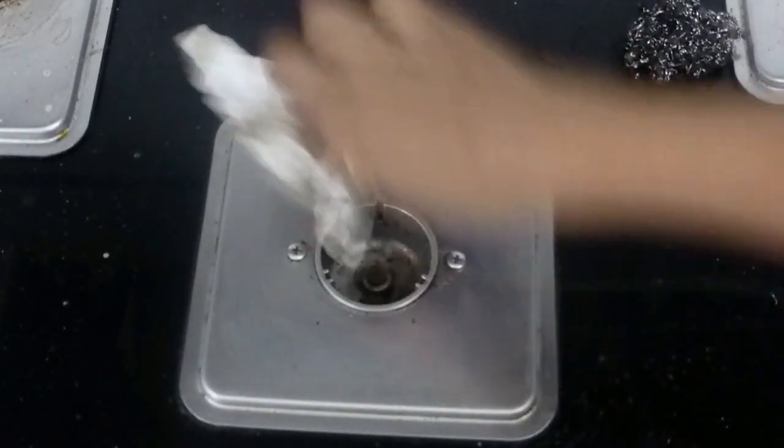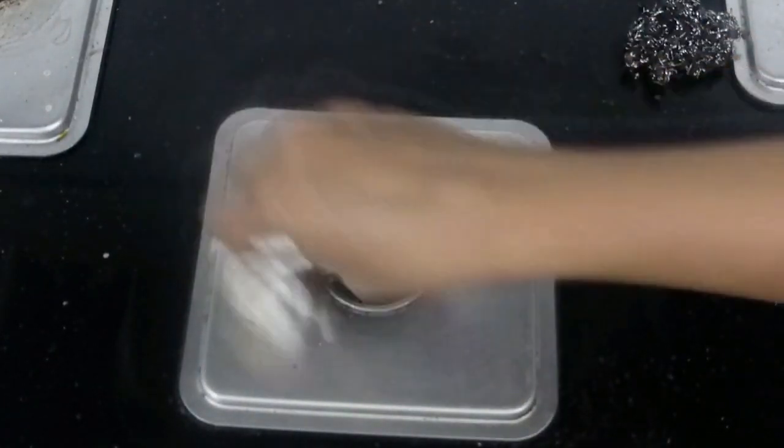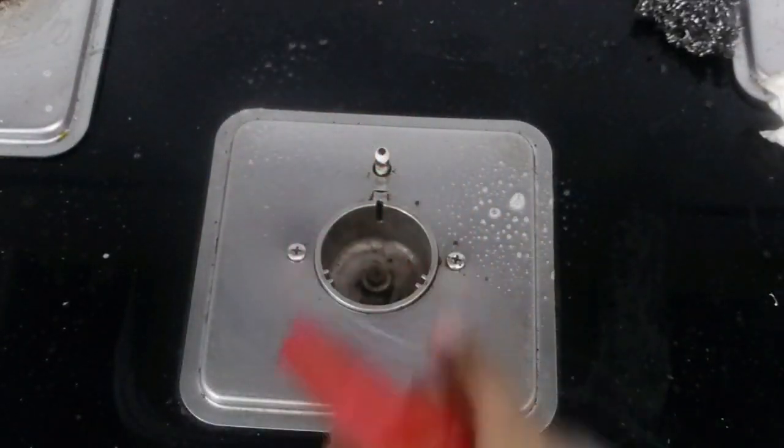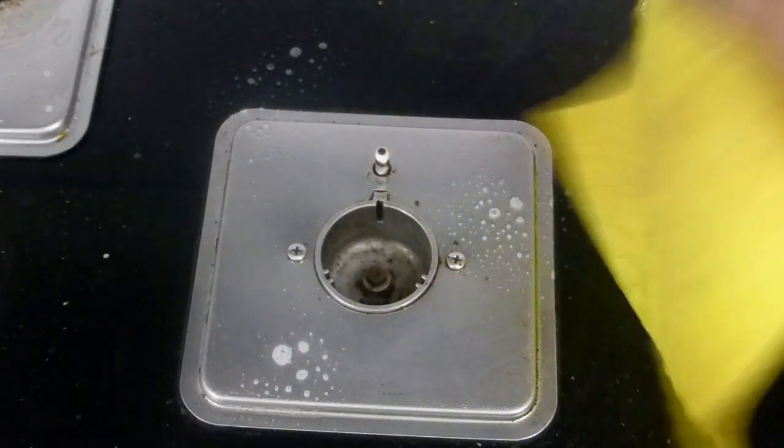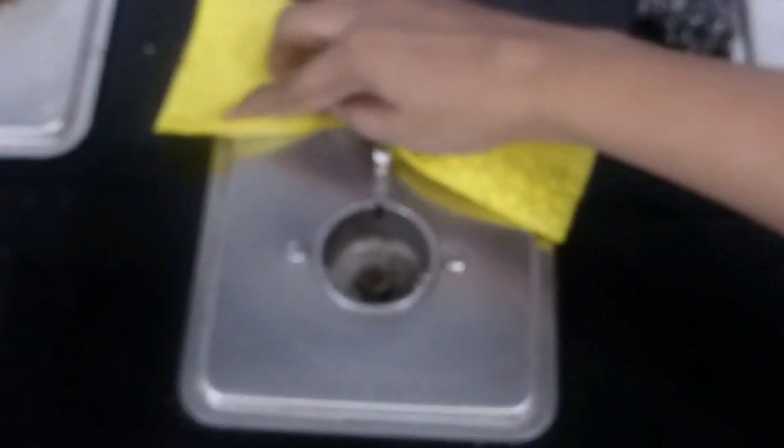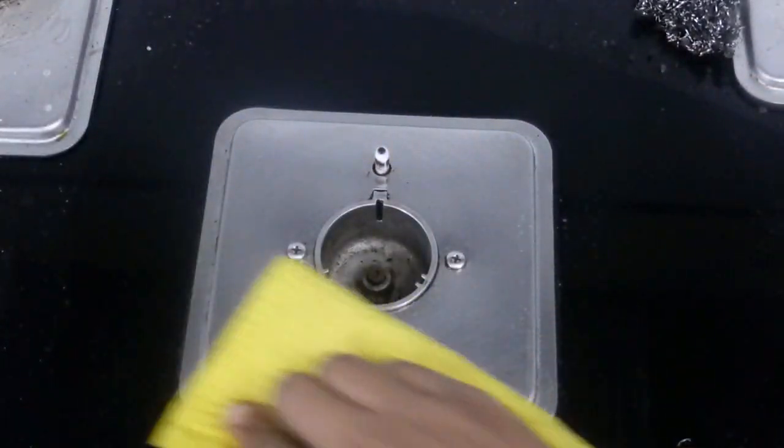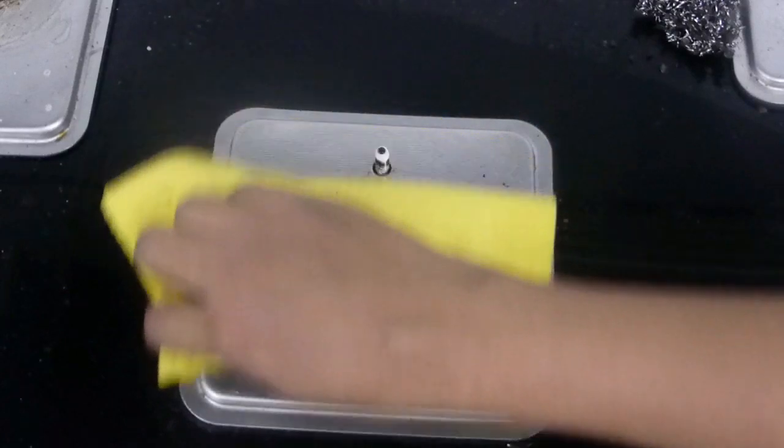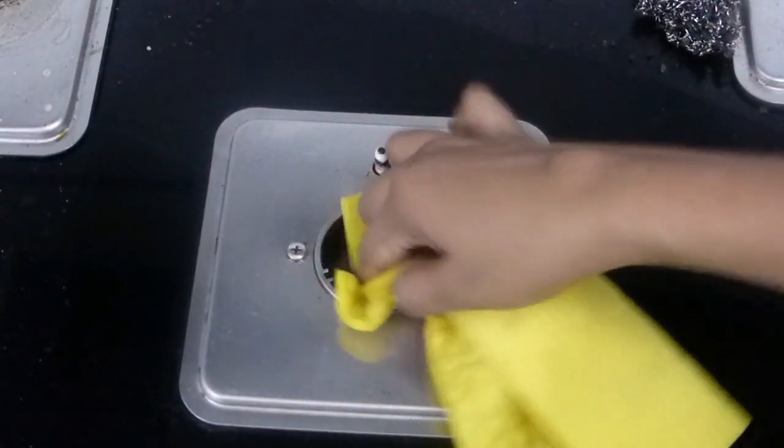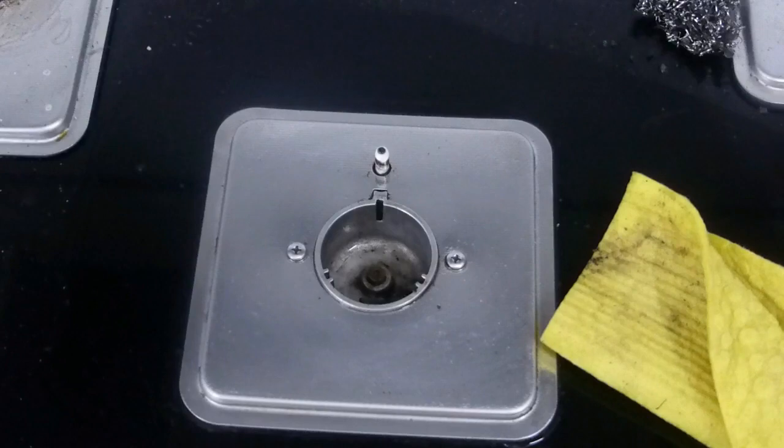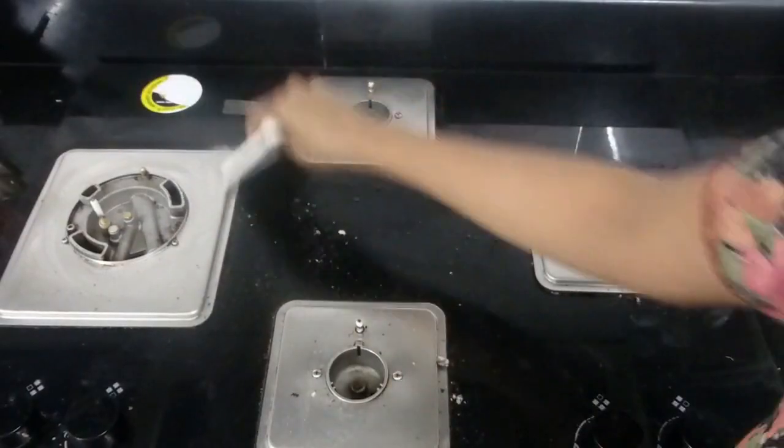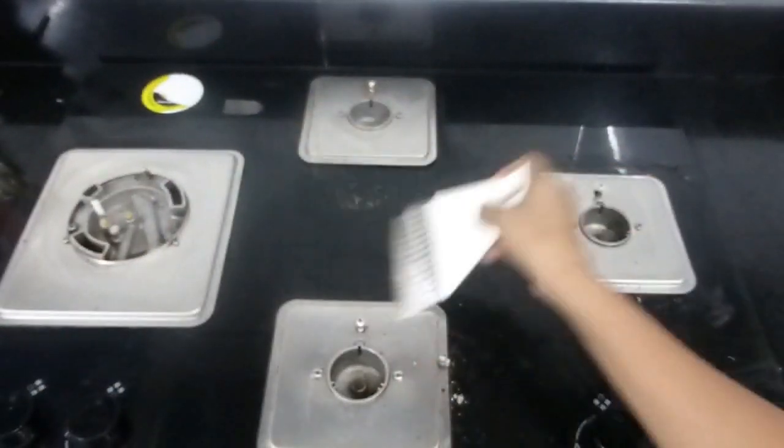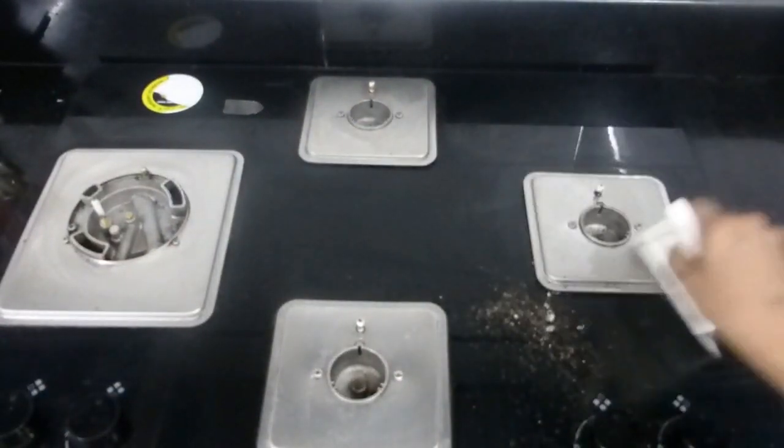So you can see now the burner cup and also the burner plates are completely cleaned. And now I am just spraying off some soap water and wiping it off with a damp towel. In the same way I have cleaned all the burner cups and burner plates. And finally I am just removing all the dirt over the glass top.